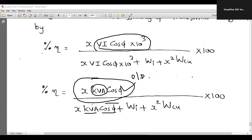And the same term also will come in the denominator as well. Output divided by output plus losses. This is actually our losses. In this manner, I can easily calculate the transformer efficiency.